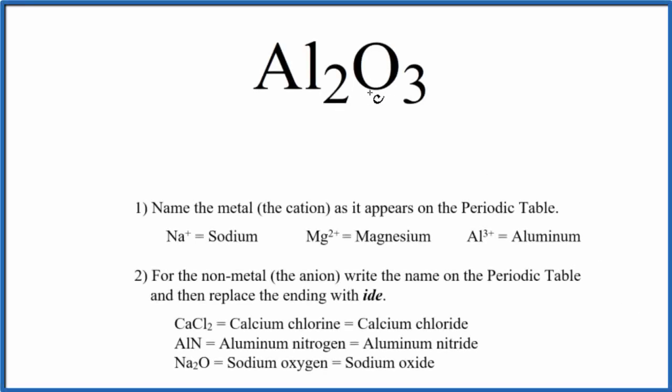To write the name for Al₂O₃, we first need to recognize that this is an ionic compound. We have a metal bonded to a non-metal that's ionic.